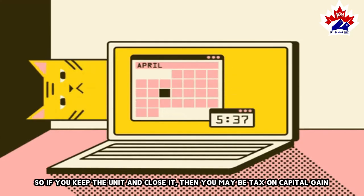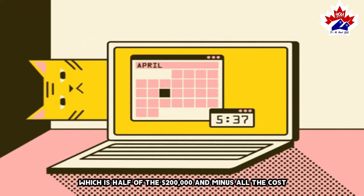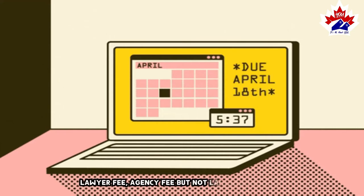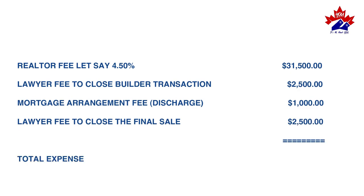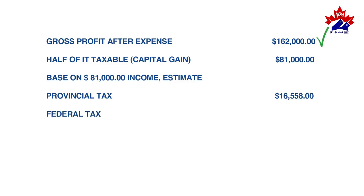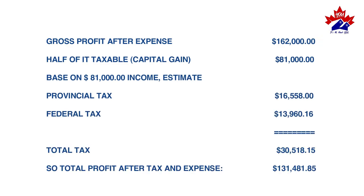If you keep the unit and close it, then you may be taxed on capital gain, which is half of the $200,000, minus all costs including lawyer fee and agency fee, but not land transfer tax. Assuming the above costs: realtor fee at 4.5% is $31,500; lawyer fee to close builder transaction $2,500; mortgage arrangement and discharge fee $1,000; lawyer fee to close the final sale $2,500. Total expenses: $37,500. Gross profit after expense: $162,000. Half of the taxable capital gain: $81,000.